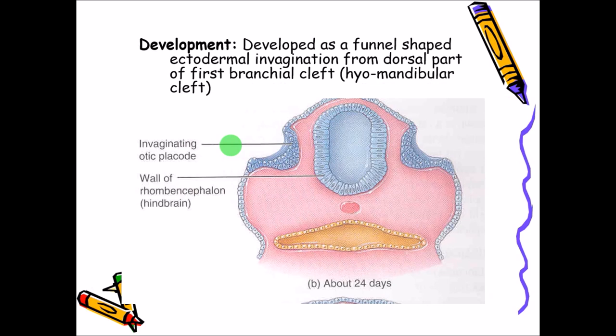The external acoustic meatus develops as a funnel-shaped ectodermal invagination from the dorsal part of the first branchial cleft. From the otic placode there will be development of the pinna as well as the external acoustic meatus.